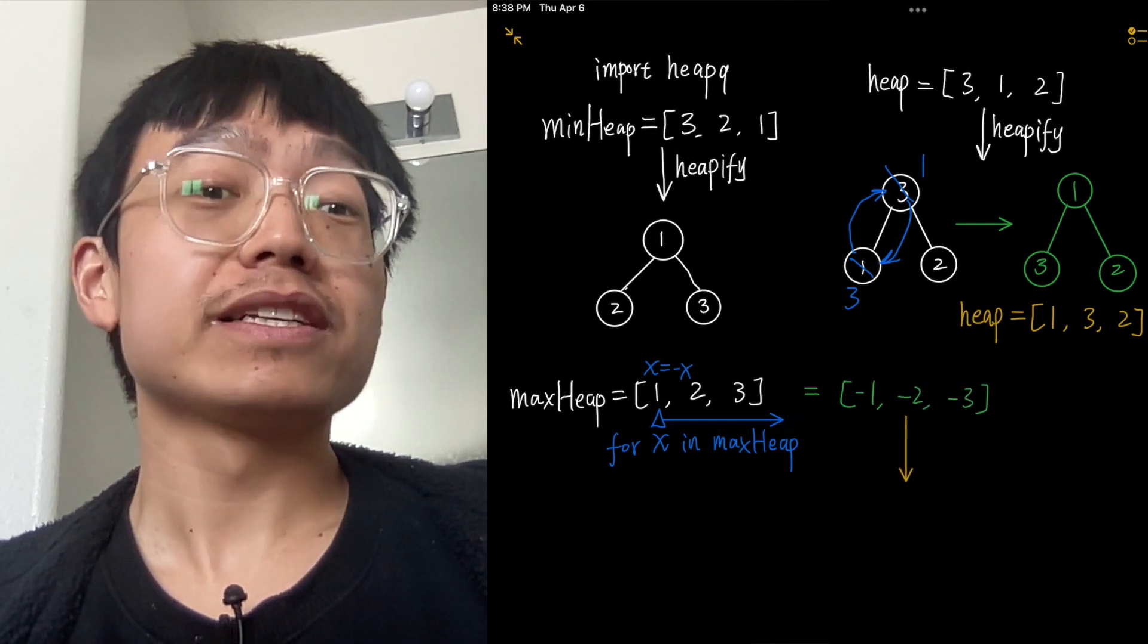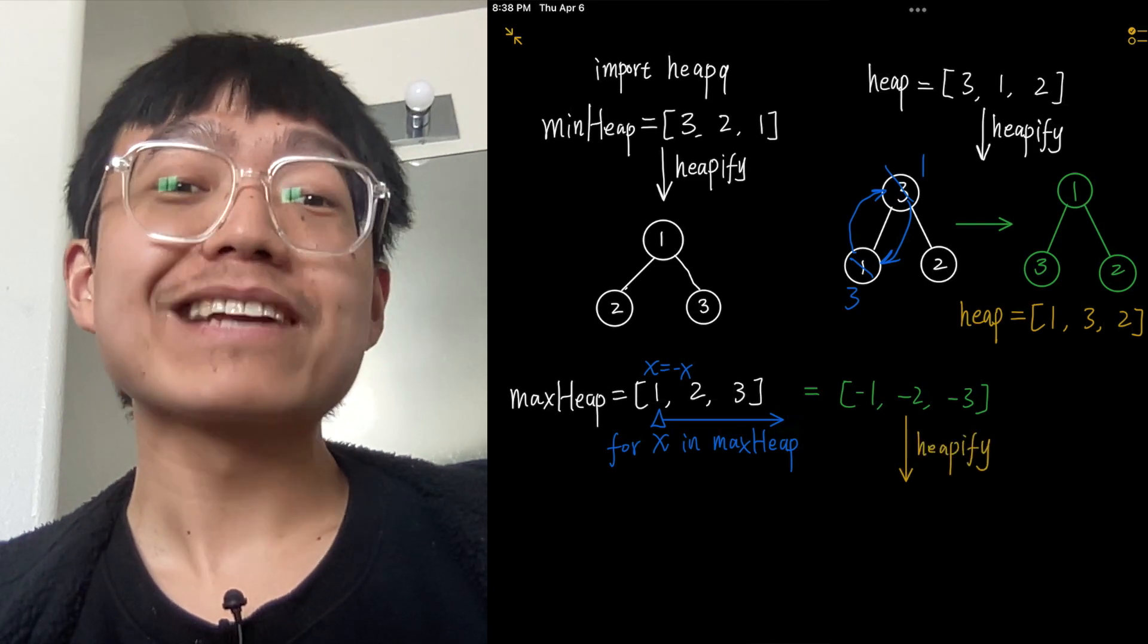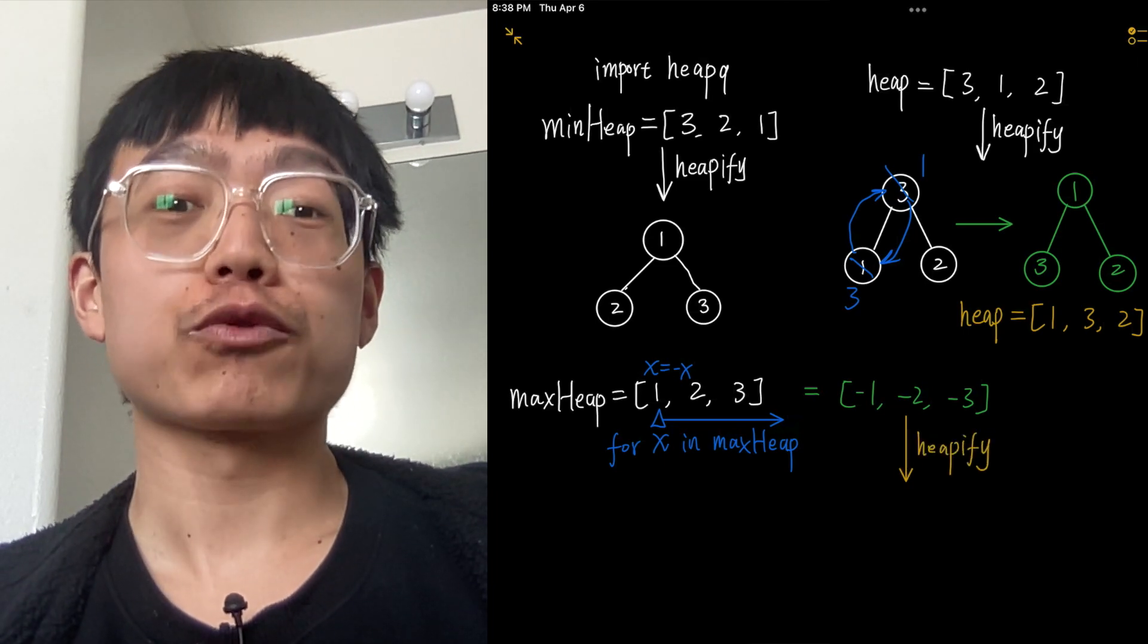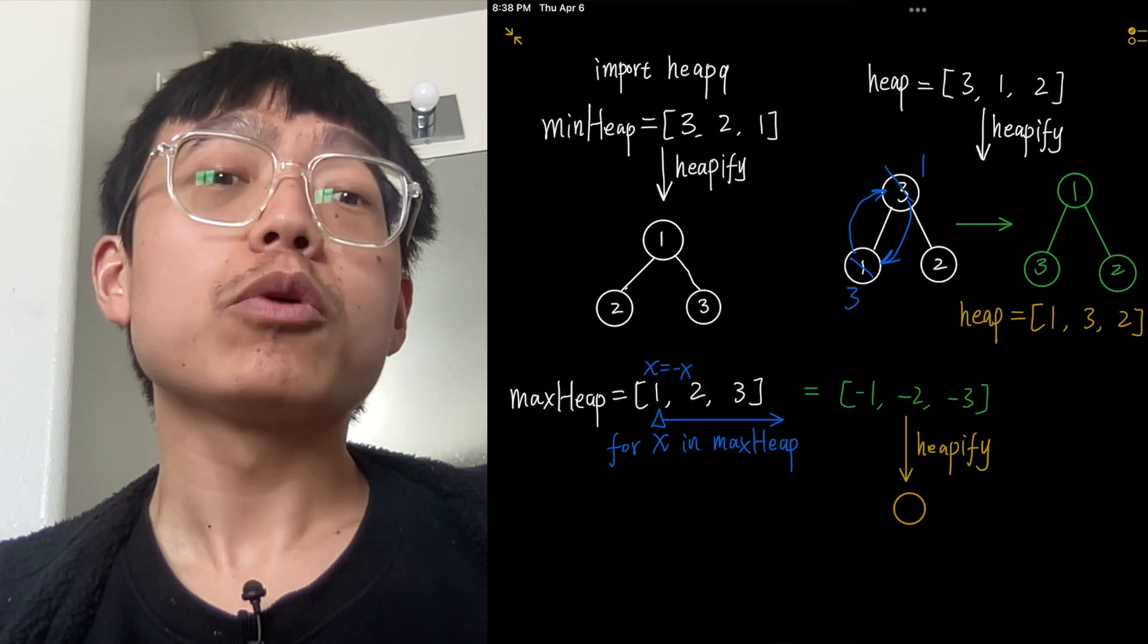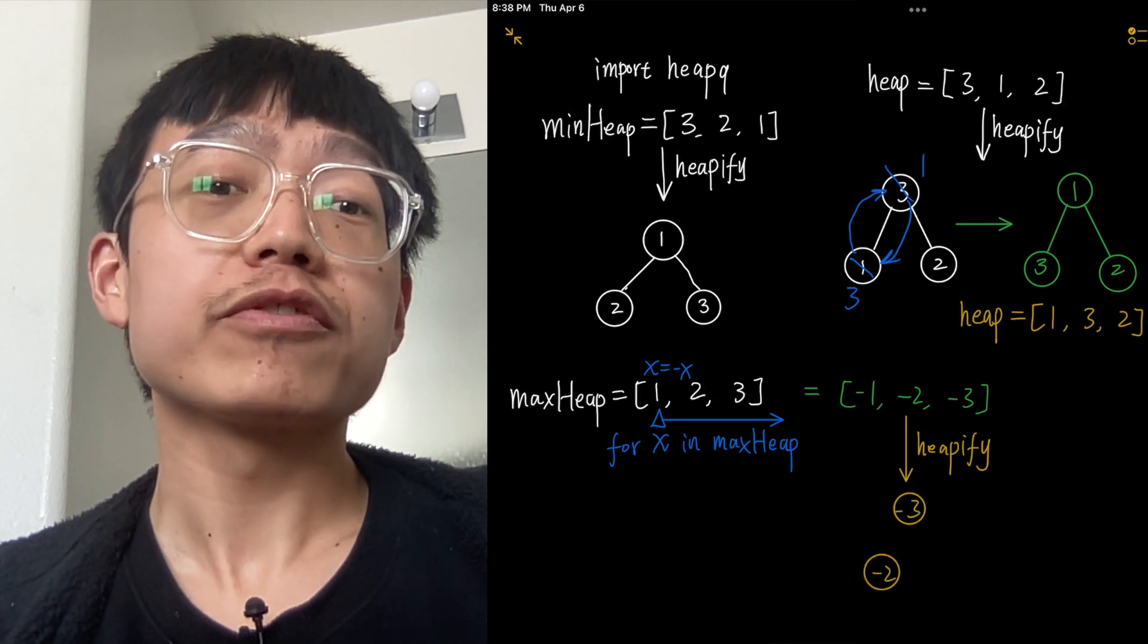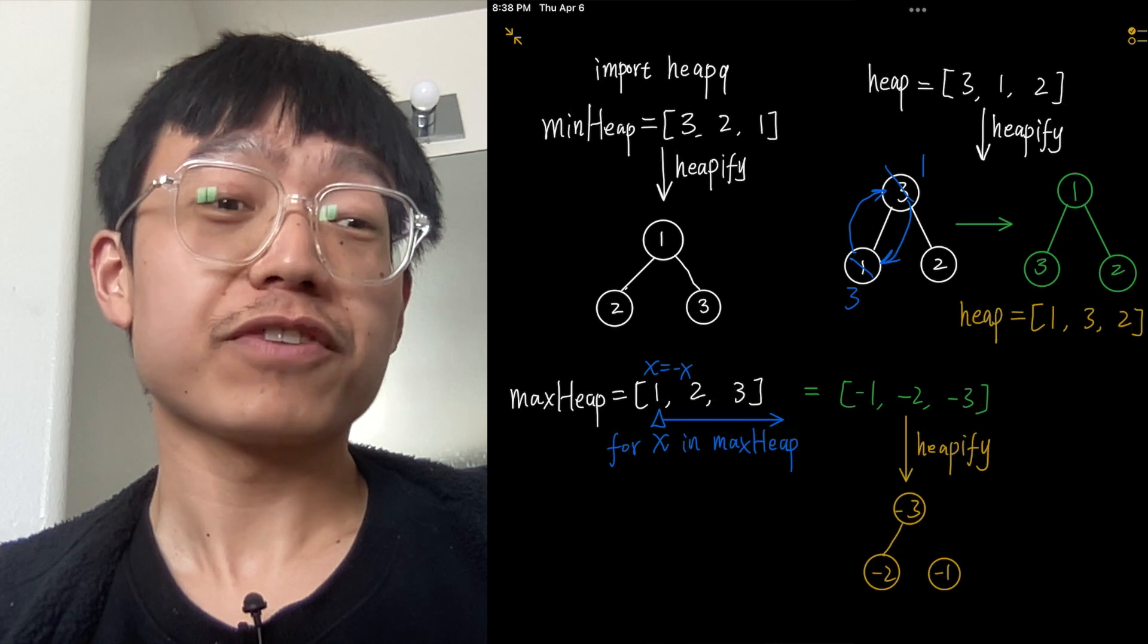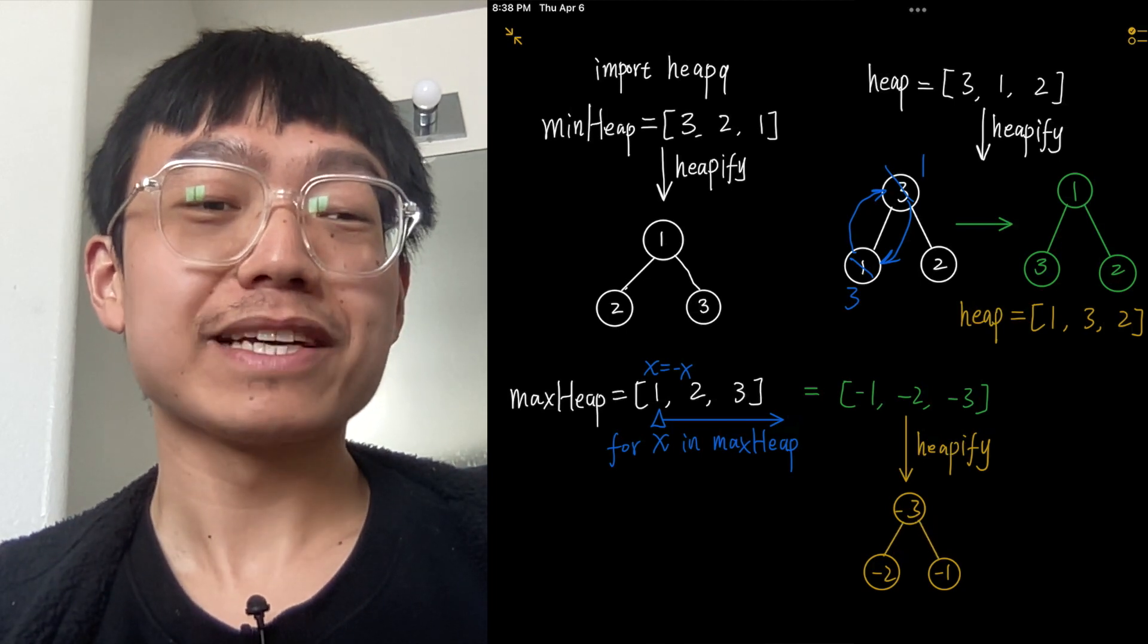The result is a new list with values [-1, -2, -3]. Then we heapify the modified list using the heapq.heapify function, turning the modified list into a minimum heap data structure.